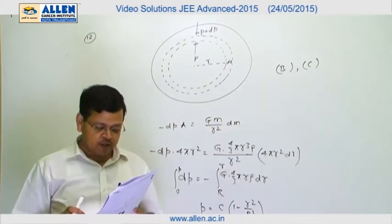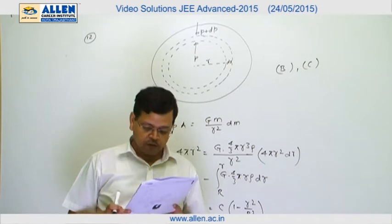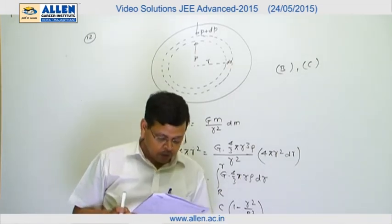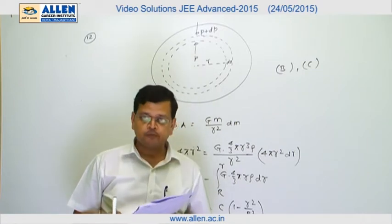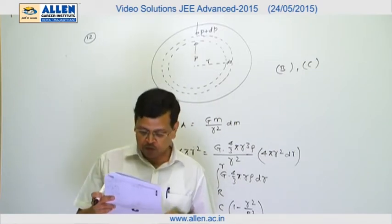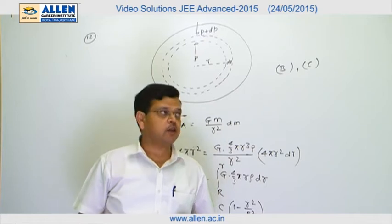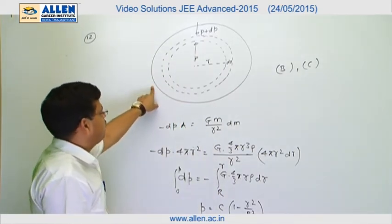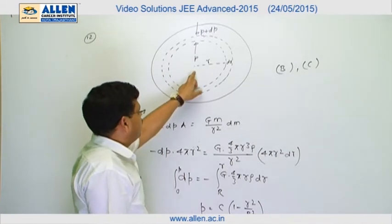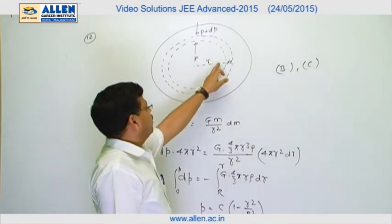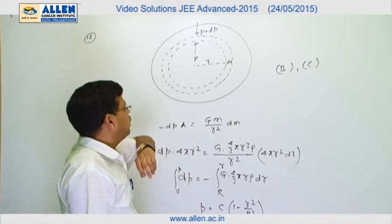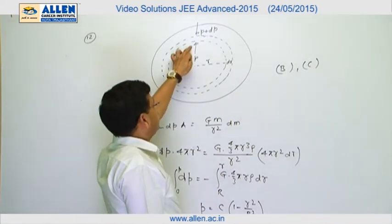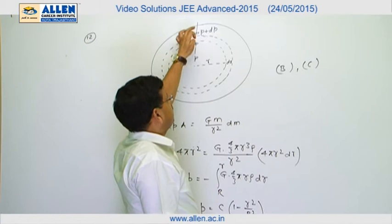Paper 2, question number 12. It is given that a spherical body of radius R consists of a fluid and is under equilibrium due to its own gravity. We have to find pressure as a function of radial distance from the center. Let us assume this sphere — I have considered a shell of width dr at a distance r from the center. The pressure from one side is P and from the other side is P plus dP.